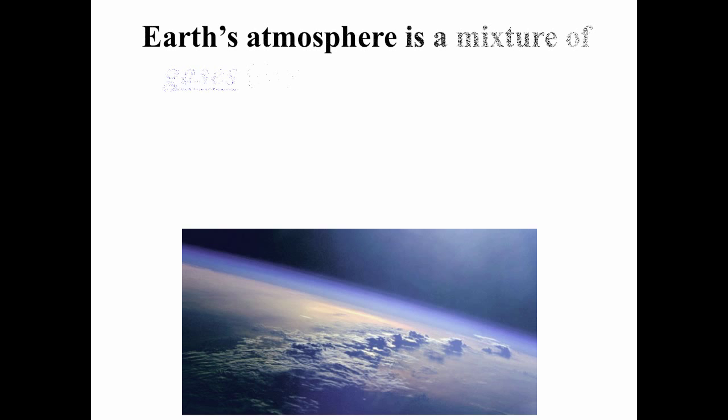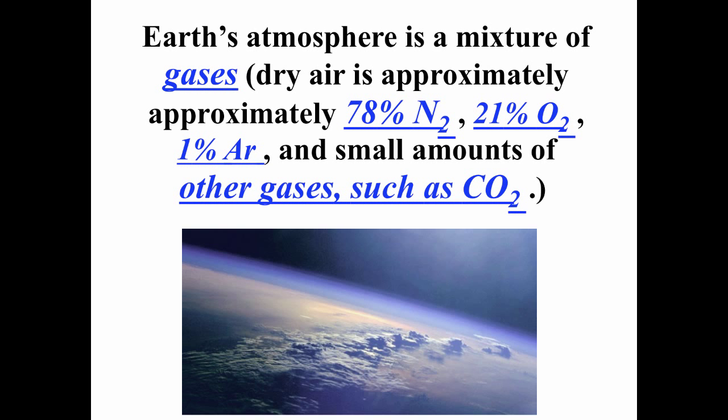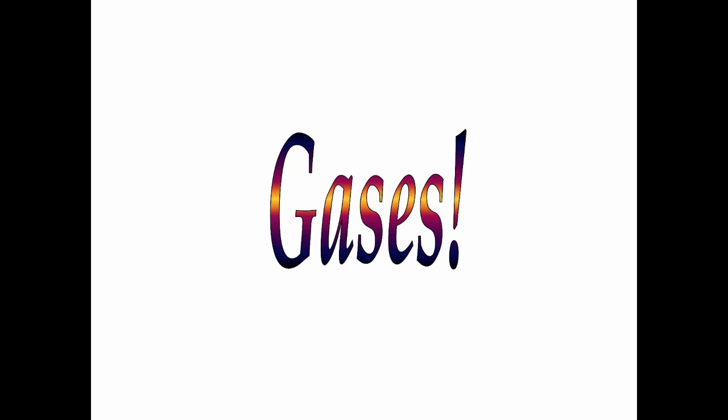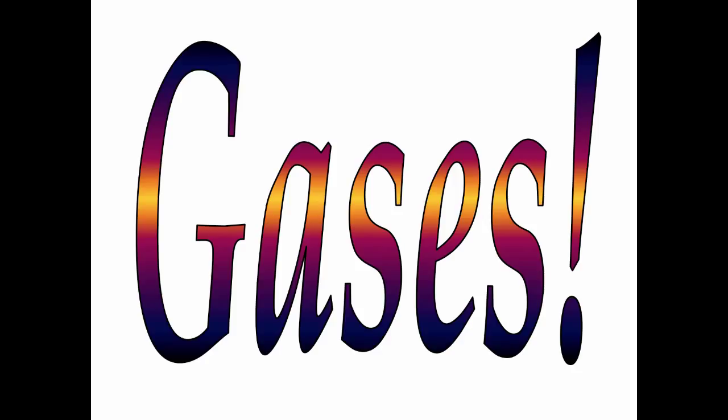Our Earth's atmosphere is made up of a mixture of gases. Dry air is about 78% nitrogen gas, 21% oxygen gas, about 1% argon, and it also contains small amounts of other gases like carbon dioxide, ozone, and nitrogen oxides. This unit is going to be the study of gases, one of the three normal phases of matter.